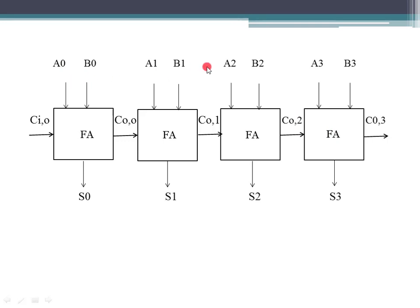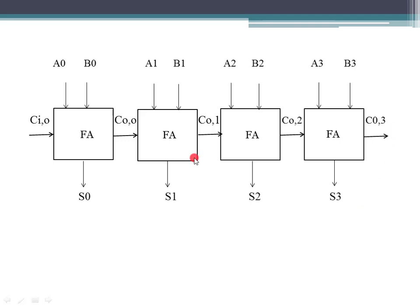For a 4-bit adder, we have inputs A0, A1, A2, A3 and B0, B1, B2, B3. We add a carry input, and the outputs are S0, S1, S2, S3, plus a carry out. We apply the inputs simultaneously at every stage.